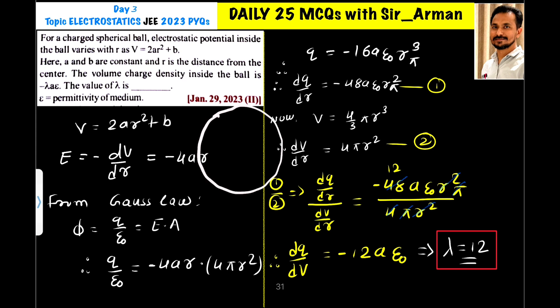So let us assume I have this spherical ball which is charged and this is a solid ball. Now, for only inside points, the electric potential varies with this relation, where A and B are constants and R is the distance. This equation is only for the inside point.